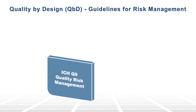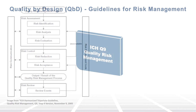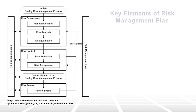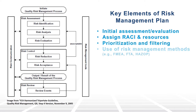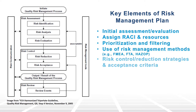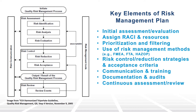One key element encompassed in ICH Q9 is risk management. Assessment of risk starts in early product development. It is a science-based approach that is linked to patient safety. It involves all functional areas in the organization, not just quality. Each risk action plan is assessed on a case-by-case basis.